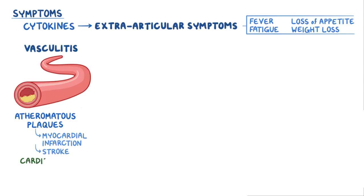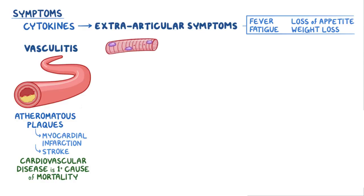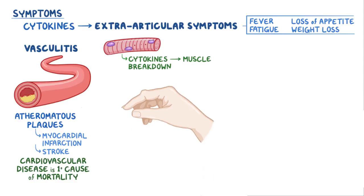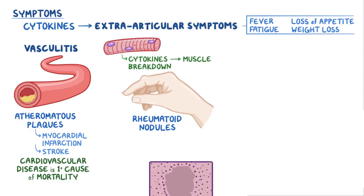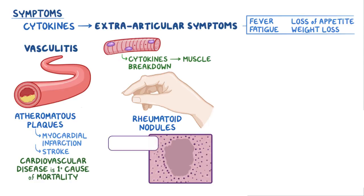In fact, cardiovascular disease is the primary cause of mortality associated with rheumatoid arthritis. In skeletal muscle, cytokines cause muscle breakdown, and in the skin, they lead to the formation of rheumatoid nodules over bony prominences. Rheumatoid nodules are round collections of macrophages and lymphocytes that have a central area of necrosis.